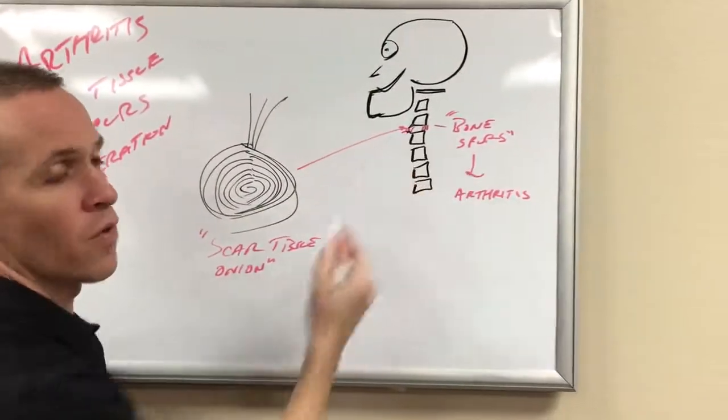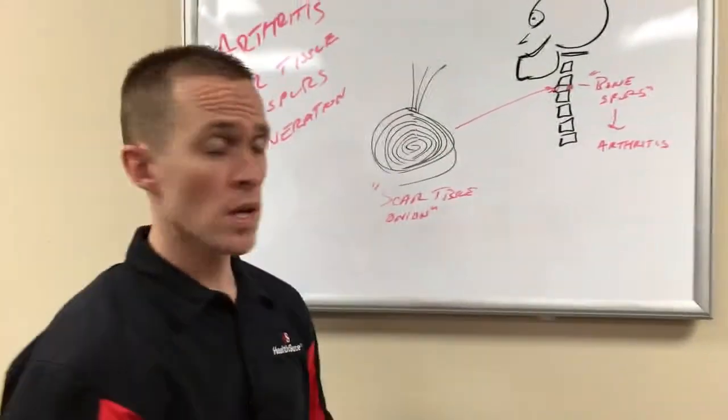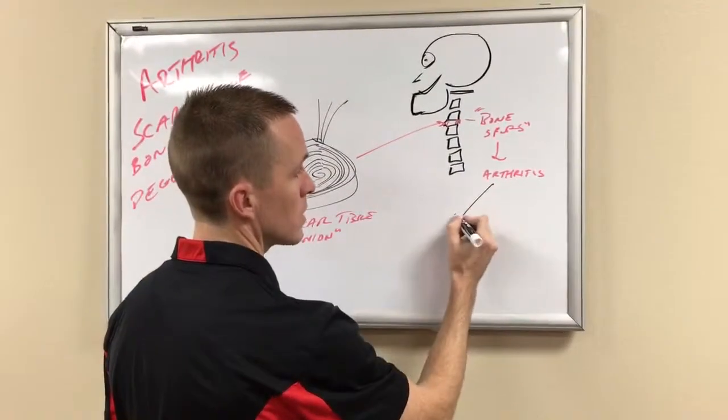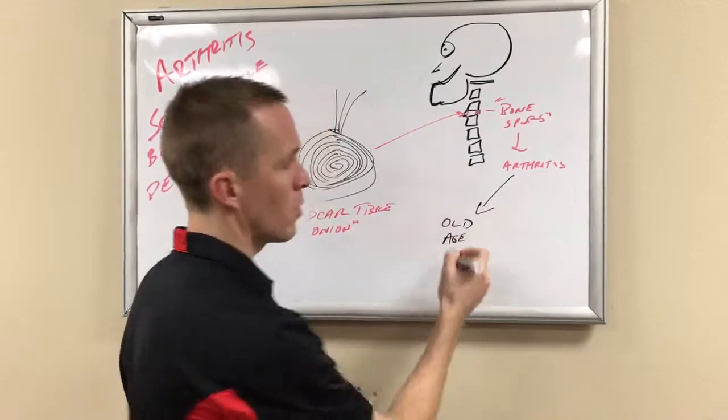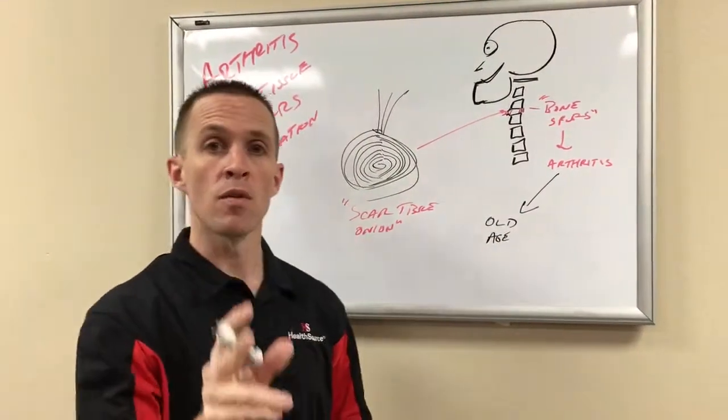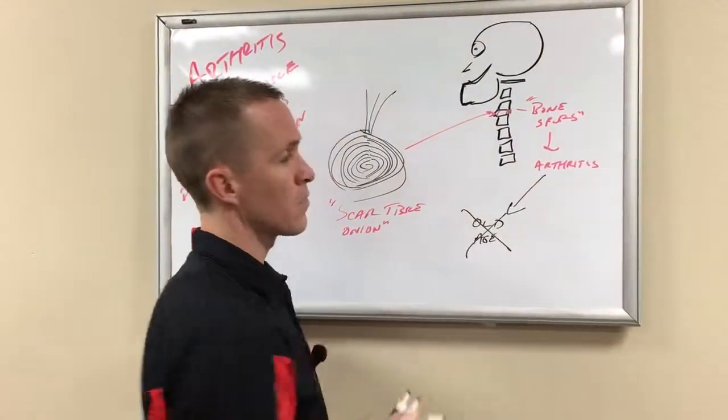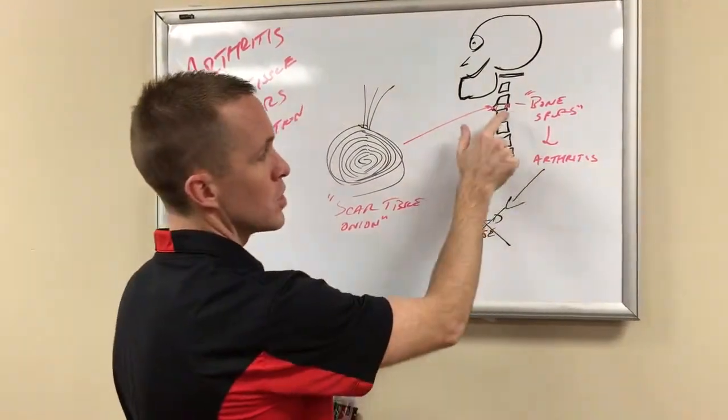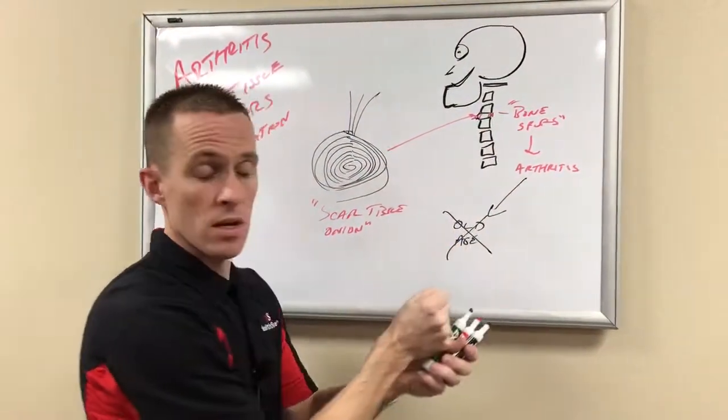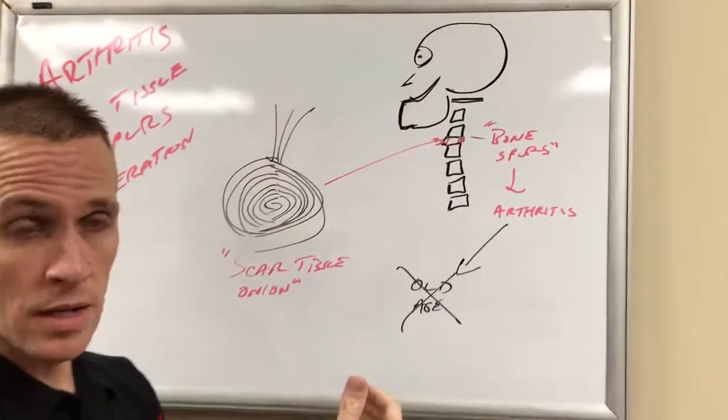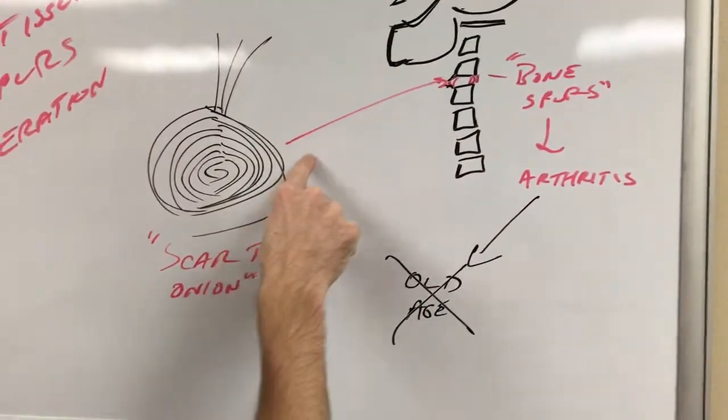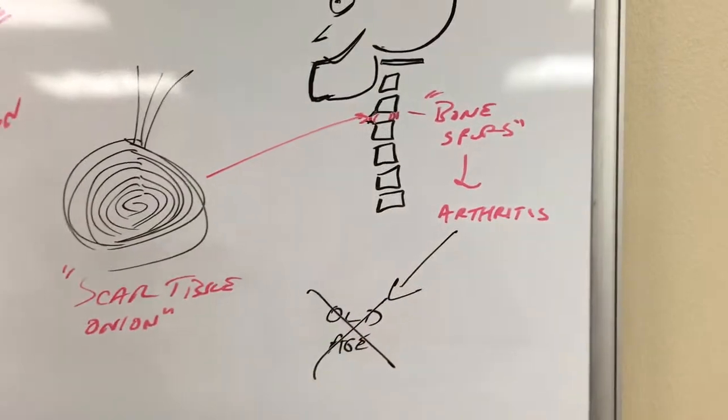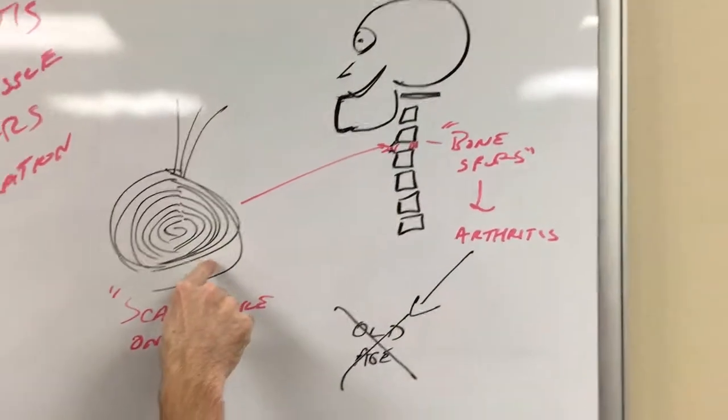So these things start to form. Now where does arthritis come from? A lot of people think that arthritis comes from getting old, old age. 'Well I'm old, I've got arthritis, that's what's supposed to happen.' Wrong. Arthritis does not come from old age. Arthritis comes from a joint that's stuck, immobilized, or subluxated and not moving. So the onion of scar tissue forms out in the area and forms the arthritis because it takes time for the scar tissue to layer down.